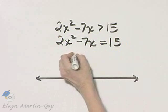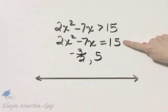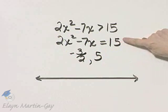When you do so, you'll have negative 3 over 2 and 5 as solutions to this equation. And the only reason you use this equation is to find these solutions.